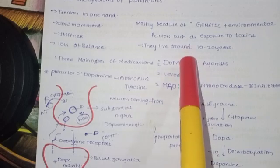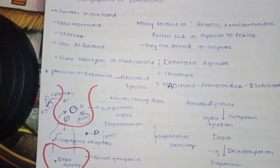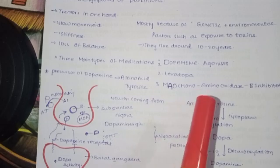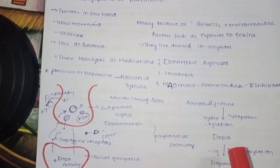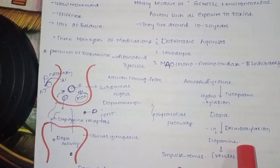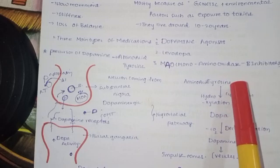The precursor of dopamine is levodopa. Tyrosine is the precursor compound — the main precursor molecule. So the pathway is: tyrosine → levodopa → dopamine.